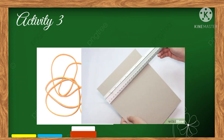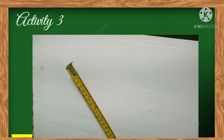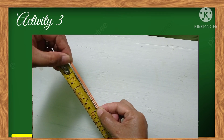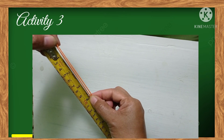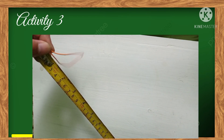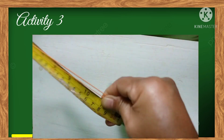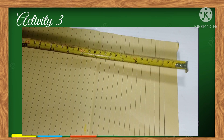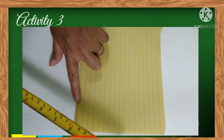For activity number three, you need the following materials: a rubber band, paper, and ruler. Measure the length of the rubber band in centimeters before stretching — the length is 10 centimeters. After stretching, the length changed to 27 centimeters. Before applying force, the length of the paper is 33 centimeters. After applying force by folding it, the length changed to 17 centimeters.